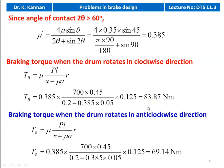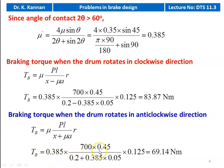The braking torque when the drum rotates in the anticlockwise direction: Tb = μ' × P × L / (X + μ' × A) × R. Substituting numerical values: 0.385 × 700 × 0.45 / (0.2 + 0.385 × 0.05) × 0.125 = 69.14 Newton meter. This is the braking torque for the anticlockwise direction.